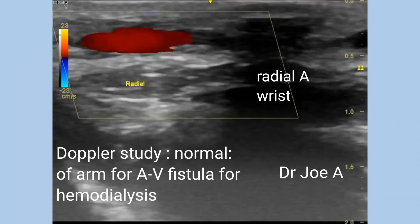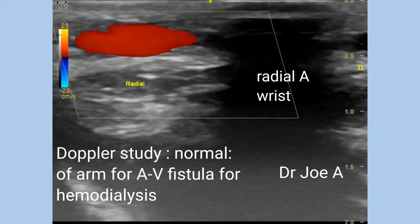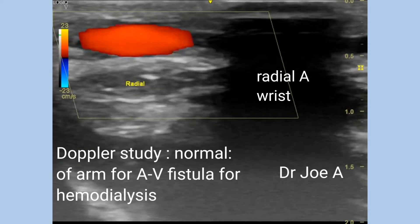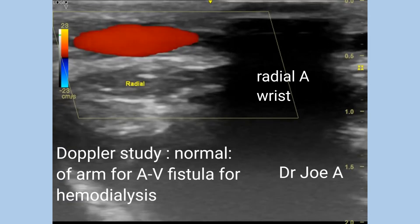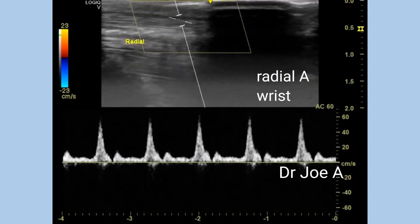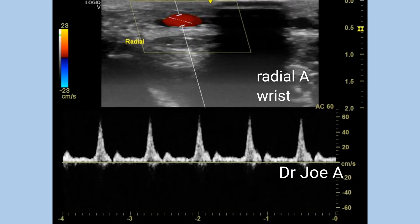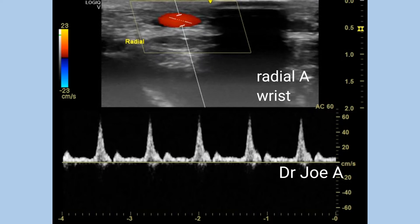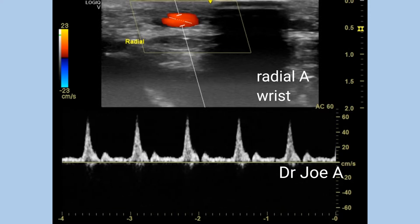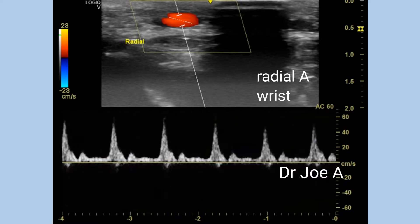For a successful hemodialysis, an AV fistula is created by connecting the cephalic vein and the radial artery at the level of the wrist. Hence, a Doppler study of the major vessels of the wrist and arm is done. These include the radial artery, the ulnar artery, the cephalic vein, the basilic vein, and the brachial artery.